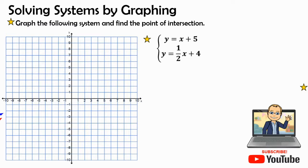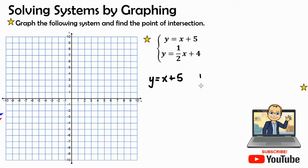In these examples we'll be solving systems by graphing. We would like to graph the following system and find the point of intersection. In our first system we have y equals x plus 5 and y equals one-half x plus 4. When we see these systems it's very important that they are in slope-intercept form, or the y equals mx plus b form. Let's write each one of these equations out and find the intercept and the slope.